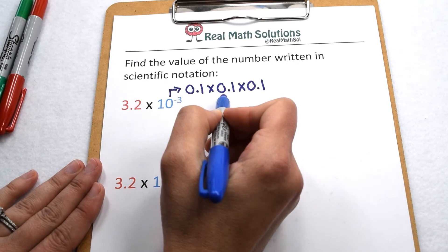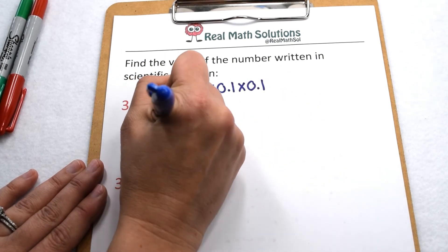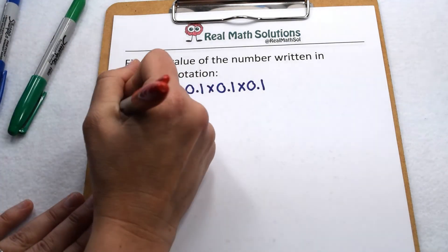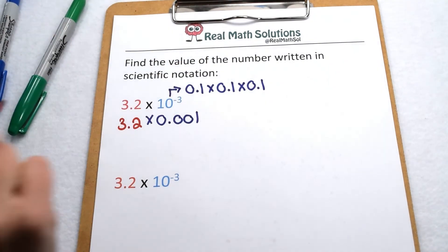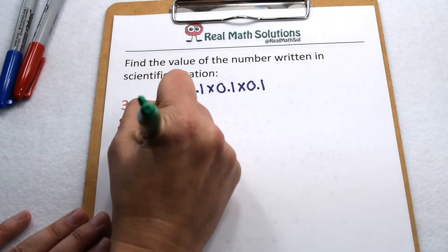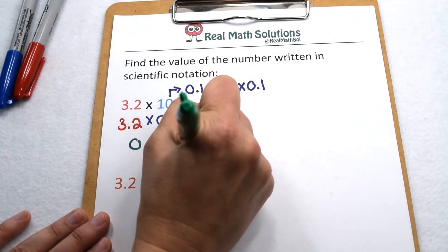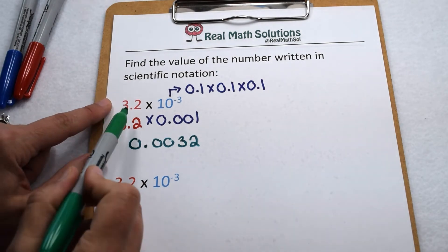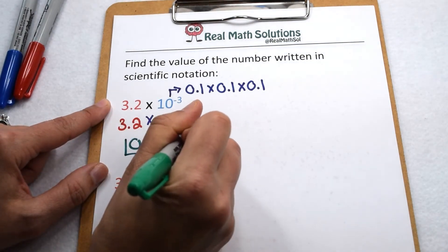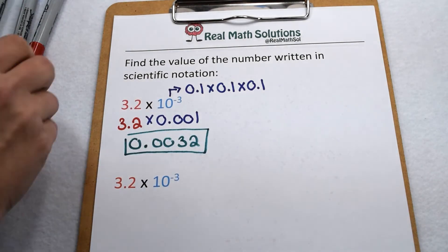So since it's to the third power that would be 1 tenth times 1 tenth times 1 tenth. Tenth times tenths is hundreds. Hundreds times tens is thousandths. So that means we're multiplying by 1 thousandths. So we would have for our final value 3.2 times 1 thousandths. When we multiply that out that's going to come out to give us 0.0032. So 3.2 times 10 to the negative third comes out to give us the decimal 32 ten thousandths.